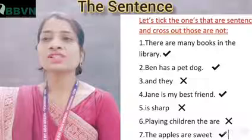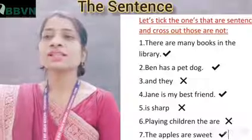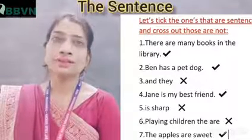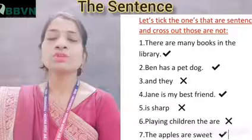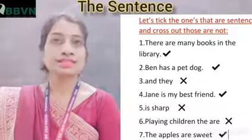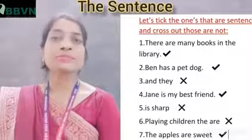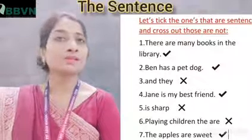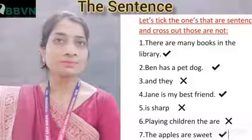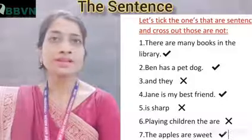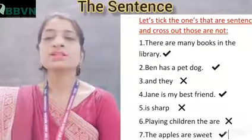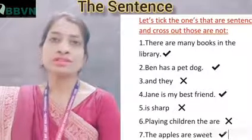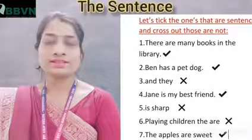The first one is: 'There are many books in the library.' This is a sentence because here we get a complete meaning. So we will take it.